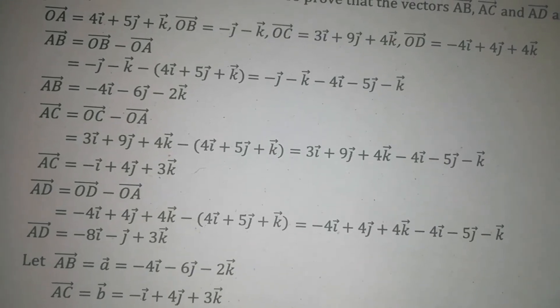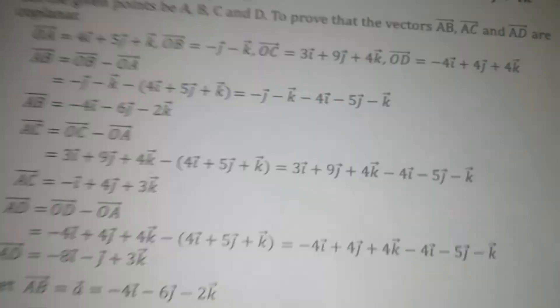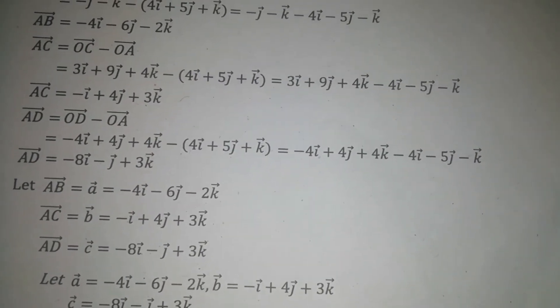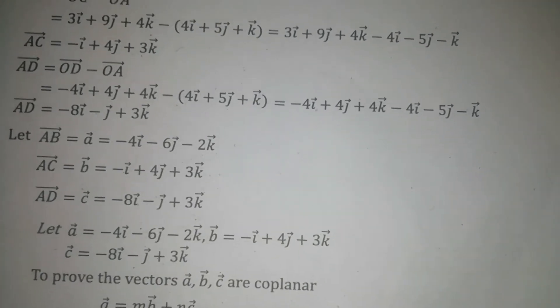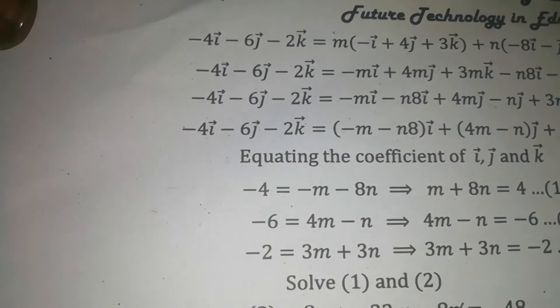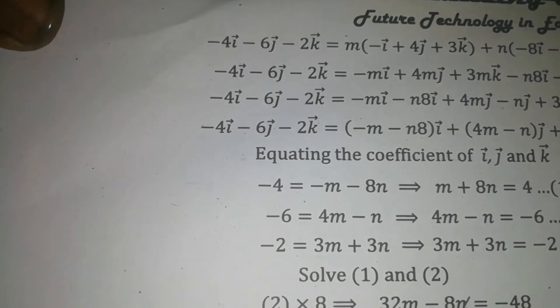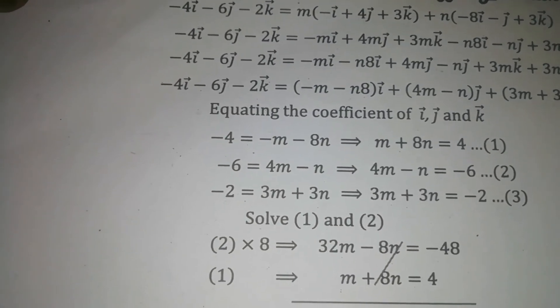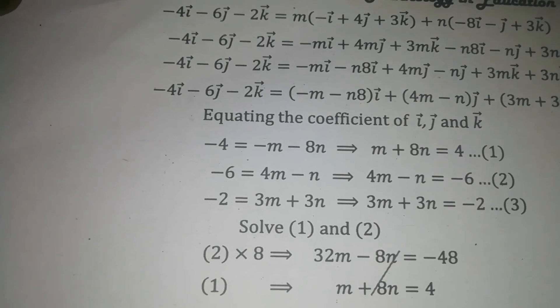Now we can take AB as vector A, AC as vector B, and AD as vector C. What is the condition for three vectors to be coplanar? Vector A is equal to L times of B plus N times of C. We can multiply by M and by N, and equate the coefficients of i vector, j vector, and k vector.